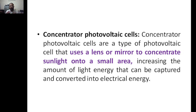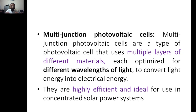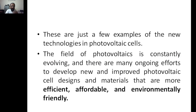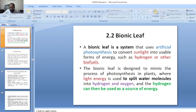Concentrator photovoltaics use lenses or mirrors to focus sunlight into a small area. Multi-junction photovoltaic cells use multiple thin-film layers, each tuned to different wavelengths of sunlight from morning to evening, making them highly efficient and ideal for concentrated solar power systems. The goal for all these technologies is efficient, affordable, and environmentally friendly solar cells.